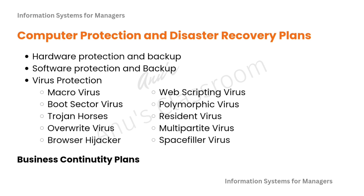That is the importance of business continuity plans — every business should have one. If not, and if an adverse situation arises, we are bound to be the losers. Computer protection and disaster recovery plans that businesses should aim for include hardware protection and backup, software protection and backup, and virus protection against macro viruses, boot sector viruses, Trojan horses, overwrite viruses, browser hijackers, web scriptings, polymorphic viruses, resident viruses, multipartite viruses, and space filler viruses. More and more viruses are being created every minute. Organizations must take adequate measures and also educate employees on safe practices.